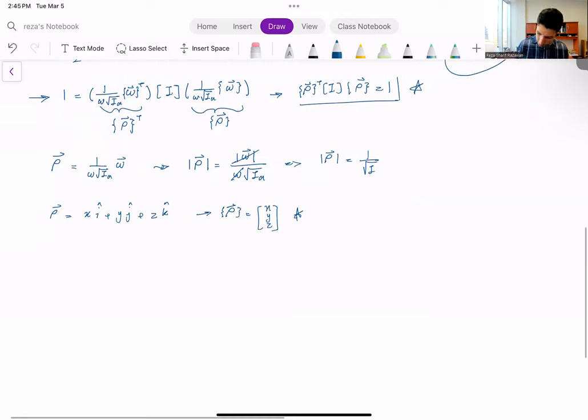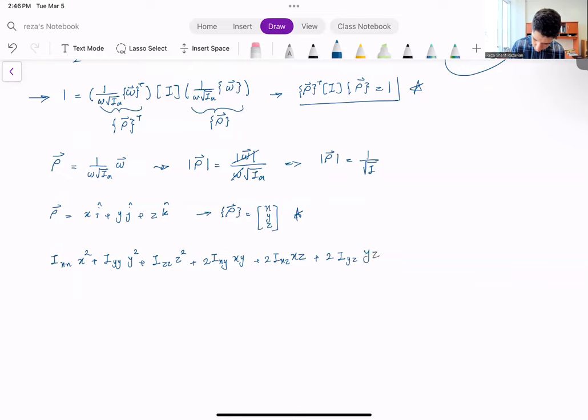Now if I go plug this definition of rho into that matrix equation, identity matrix equation that I had, what I end up with is some equation: I_xx x squared plus I_yy y squared plus I_zz z squared plus 2 I_xy times x times y plus 2 I_xz times x times z plus 2 I_yz times y times z equals 1.